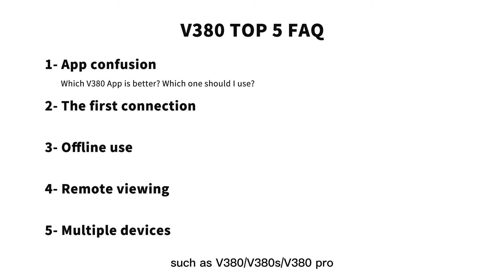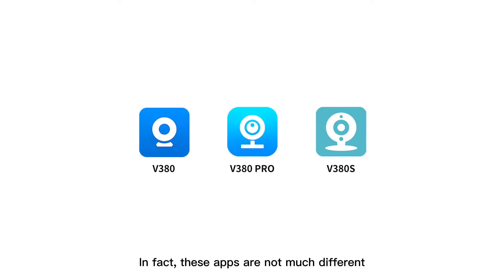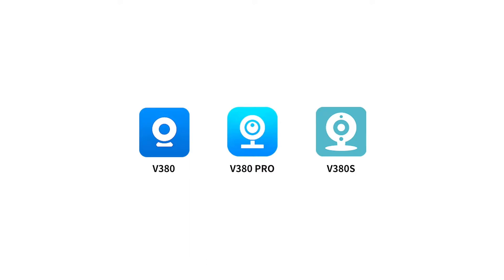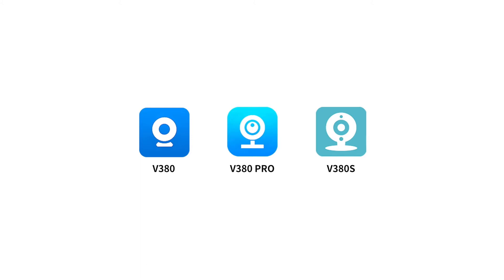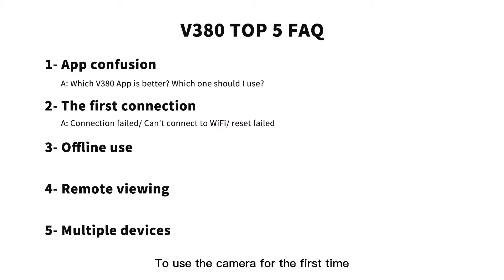The first question is software confusion. There are many versions of the V380 app, such as V380, V380S, and V380 Pro — some are V380 modified apps. In fact, these apps are not much different; the basic functions and operation methods are the same. It doesn't matter which one you use — just download the app according to your camera's user manual.